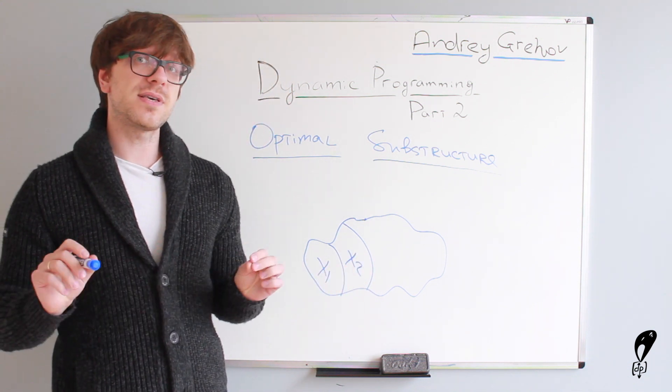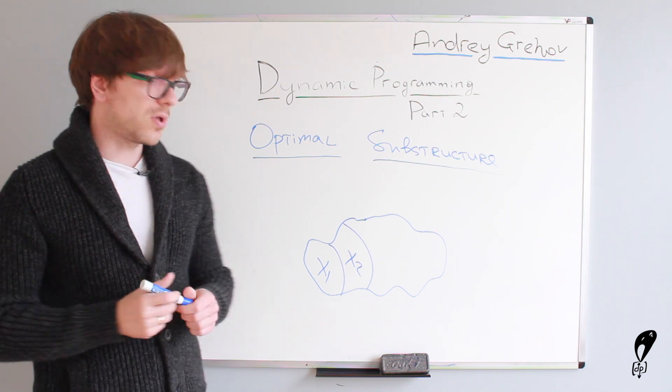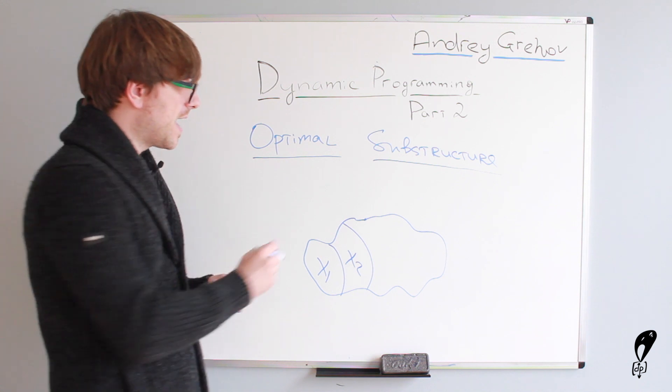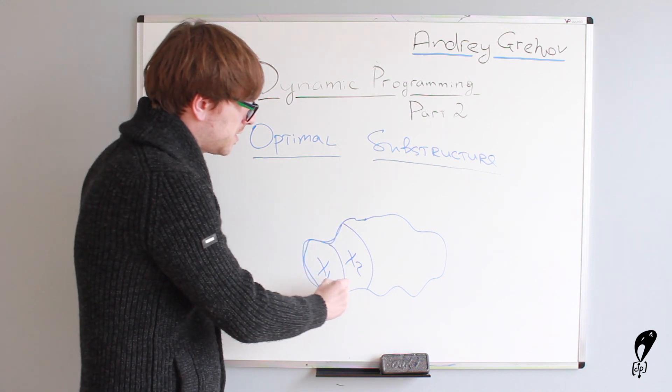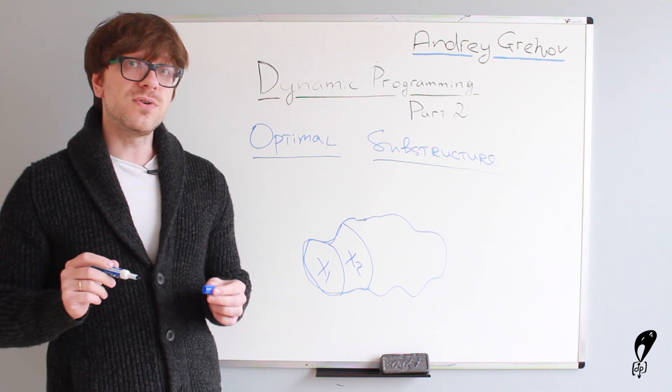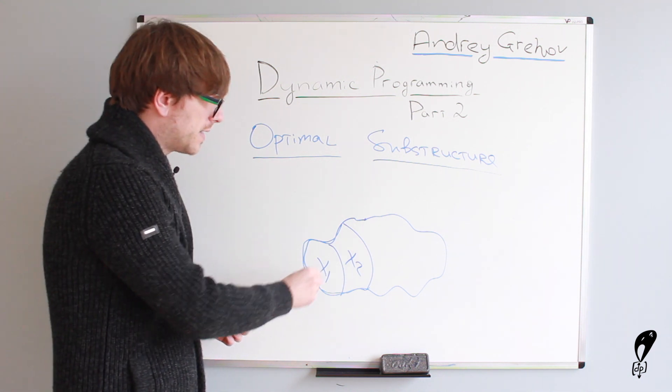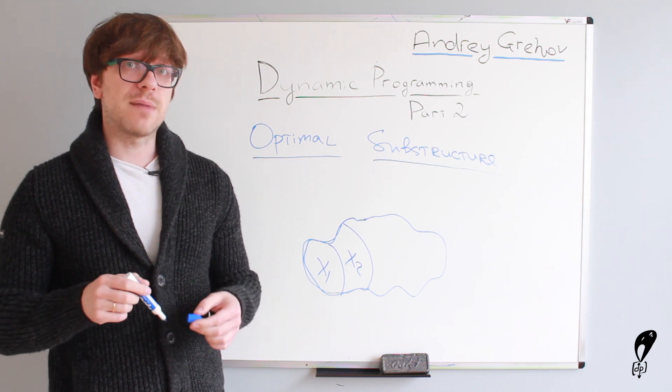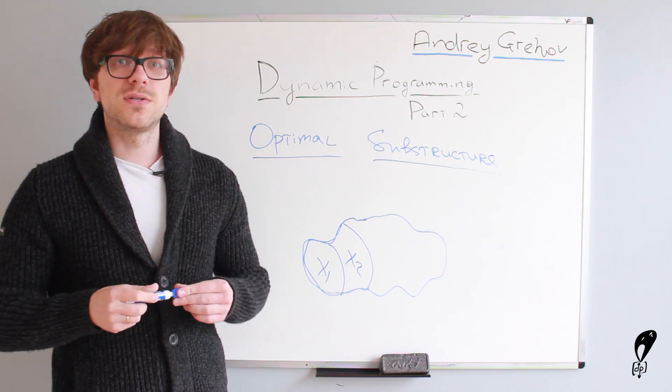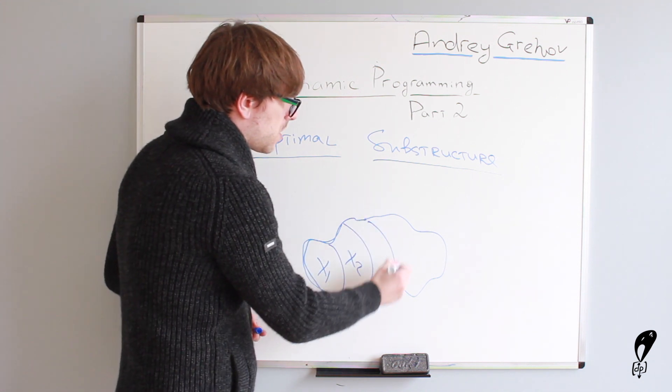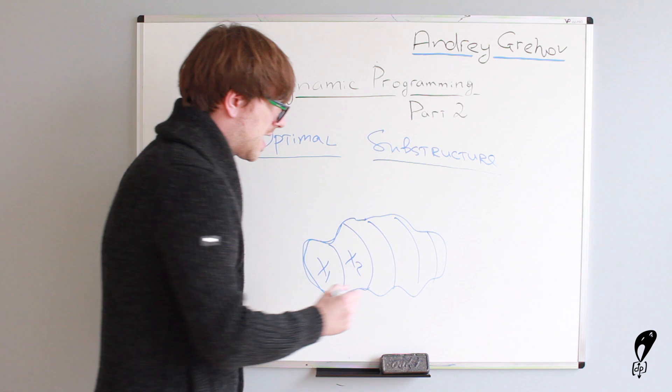and solve x2, right? But here is the thing. In order to solve x2, we don't have to recalculate everything from the start. We don't have to do it. Why? Because we can use the result of x1 to solve x2. And by doing so, we get optimal solution to x2.